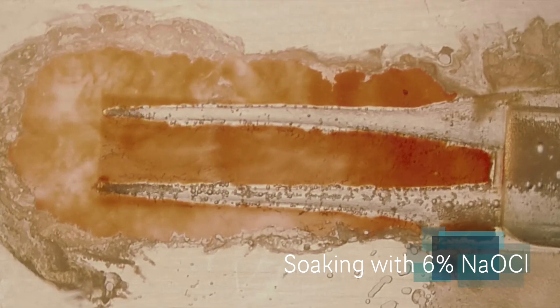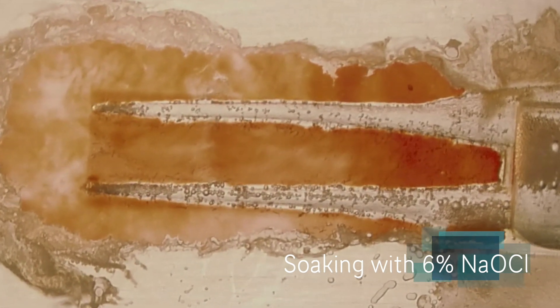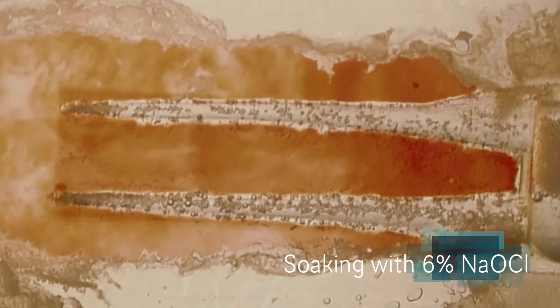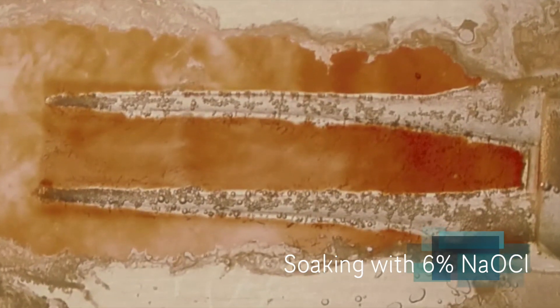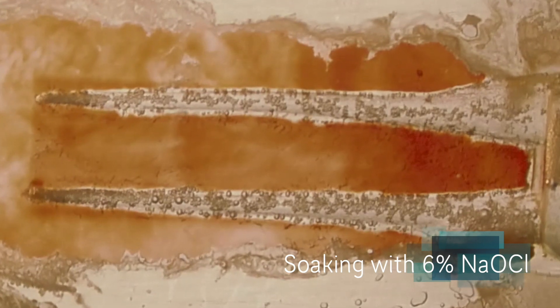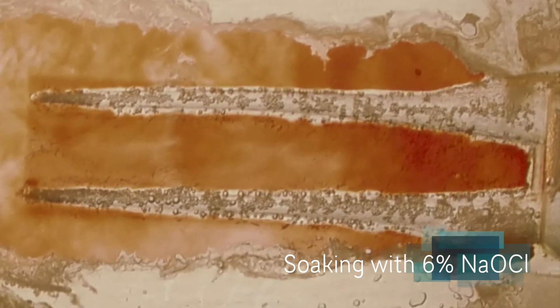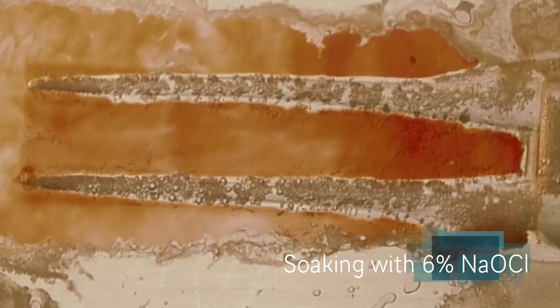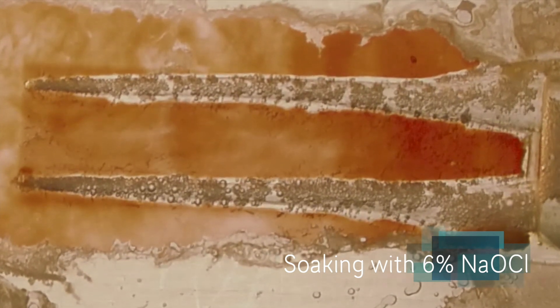Actually, the best time to soak with hypochlorite is after the shaping is done because, take a look at this. Once you have a canal that has some shape to it, even subtle, slight shape, there's enough hypochlorite in there to seriously degrade the pulp tissue.